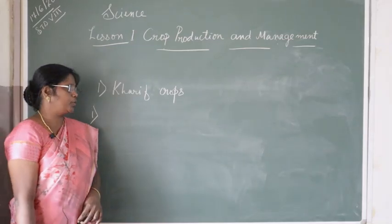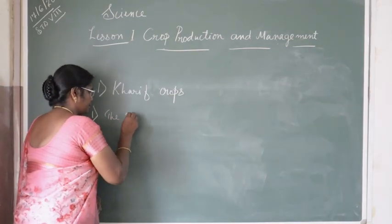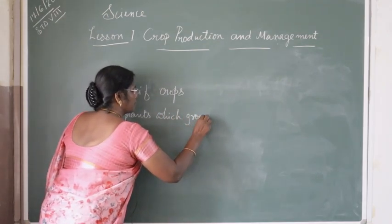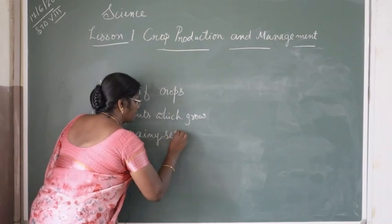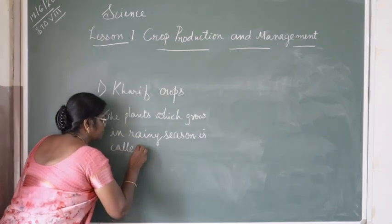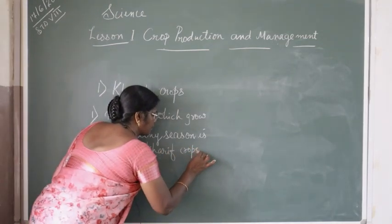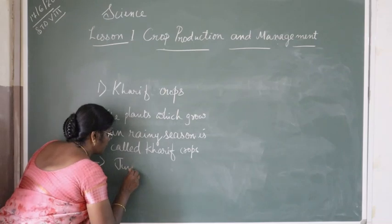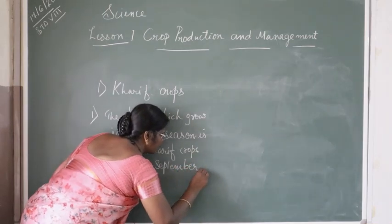Crops can be classified into two. One is Kharif crops — the plants which grow in the rainy season are called Kharif crops. The time period for Kharif crops is June to September.